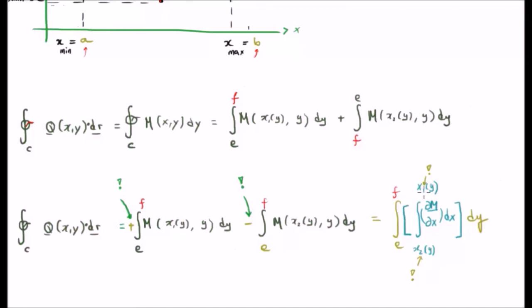However, this time we're going to have x1 of y on top and x2 of y on the bottom, whereas when we discussed P we actually had y2 of x on top and y1 of x on the bottom. So just be careful with this because it could cause confusion.